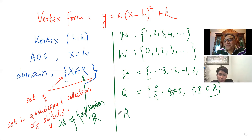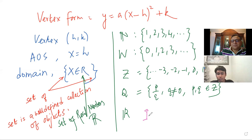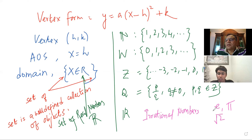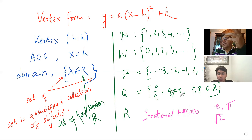Then we have rational numbers. Rational numbers are of the form P over Q, where Q is not equal to zero. And P and Q belong to integers. You see this? So like fractions that you talk about. Then we have the set of real numbers. Now there are many numbers which are irrational. Before that, let's look into irrational numbers.